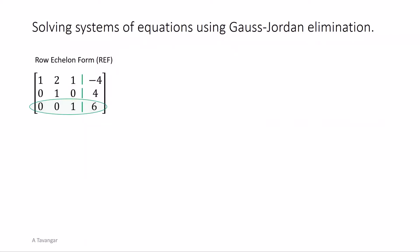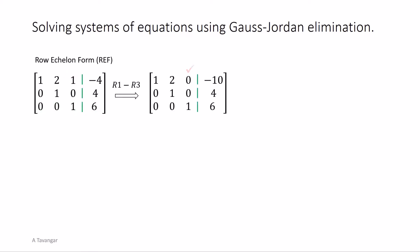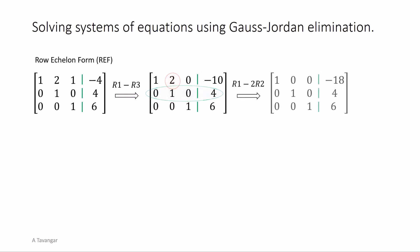Next we subtract the third row from the first row to make the one zero. This completes the work on column three. Moving on to the left, we will use row operations using the second row to make the entry above the leading one of the second row zero. To do so we take two times row two and subtract it from the first row. This completes the work on column two. Now in the resulting matrix all leading entries are one and all entries below and above each leading one are zeros.